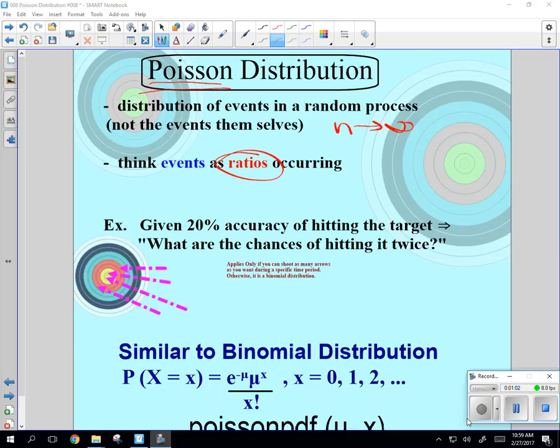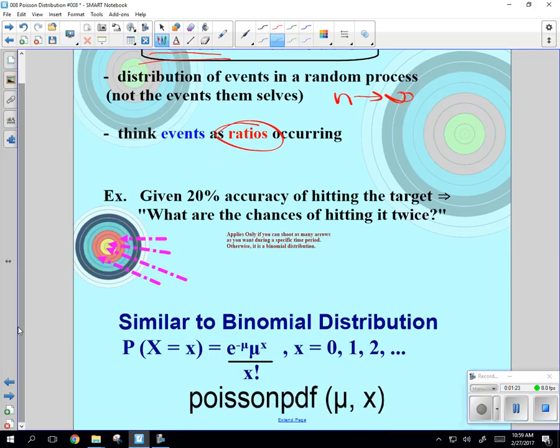Given 20% accuracy of hitting a target, what are the chances of hitting it twice? Is it putting a ceiling on it? It's not saying 2 times, 5 times, 10 times. It's hitting it twice. We're going to take a look at stuff like that in this section.